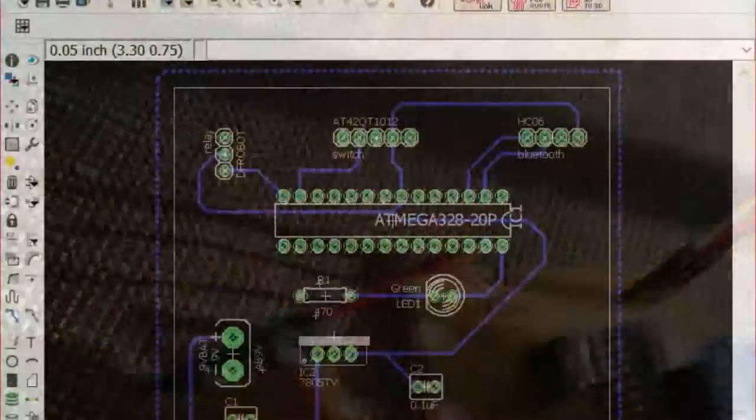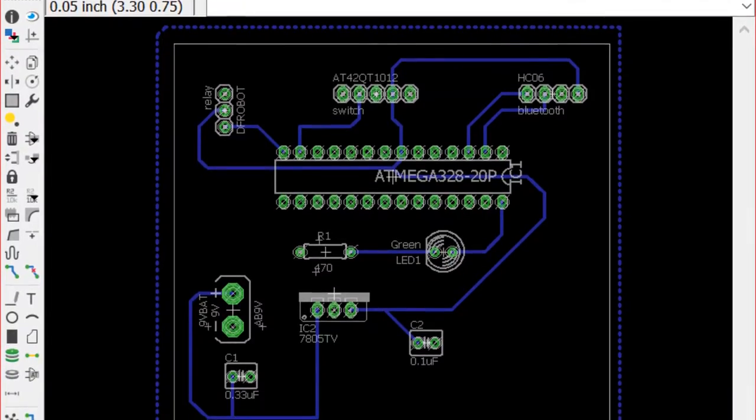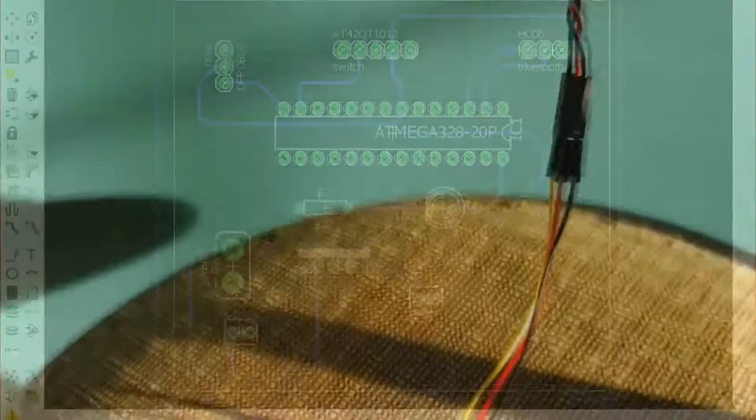And so basically we designed the PCB on Eagle, which is a CAD software for designing printed circuit boards. And I printed it at a local place to print PCBs and then I soldered all the components onto it.